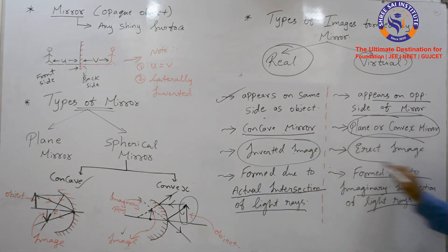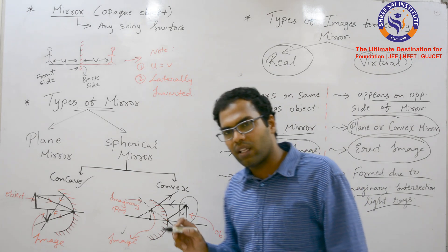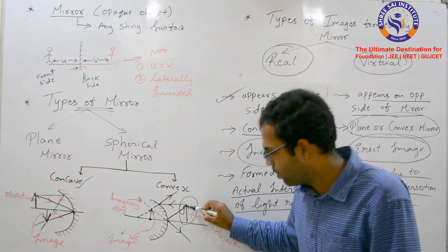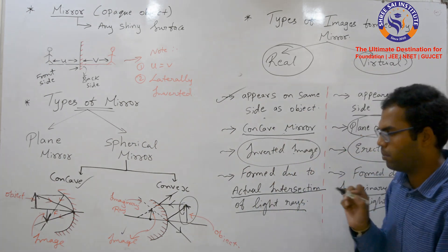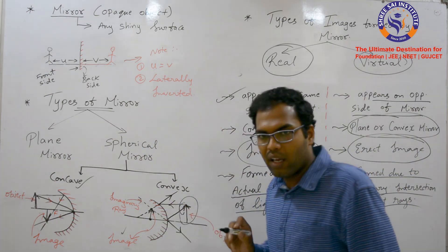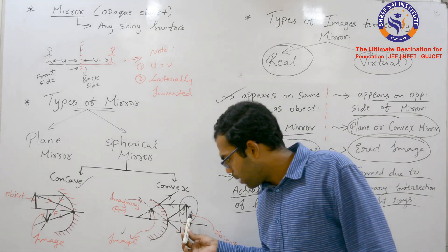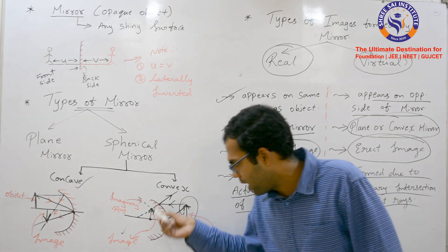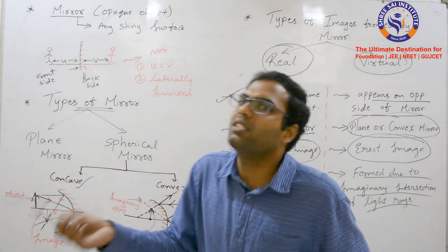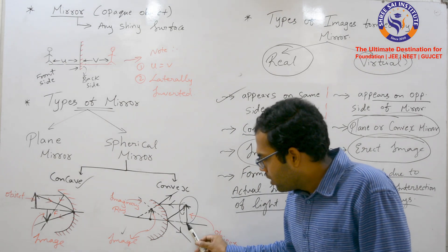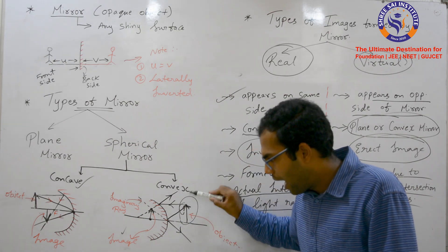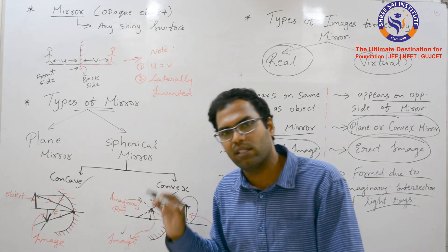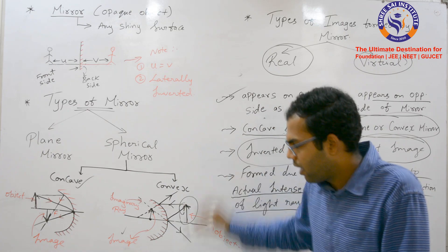The virtual image, on the other hand, is an erect image. The size of the image depends on the object distance. If this is the value of the object distance, the image distance gives the size of the image formed.